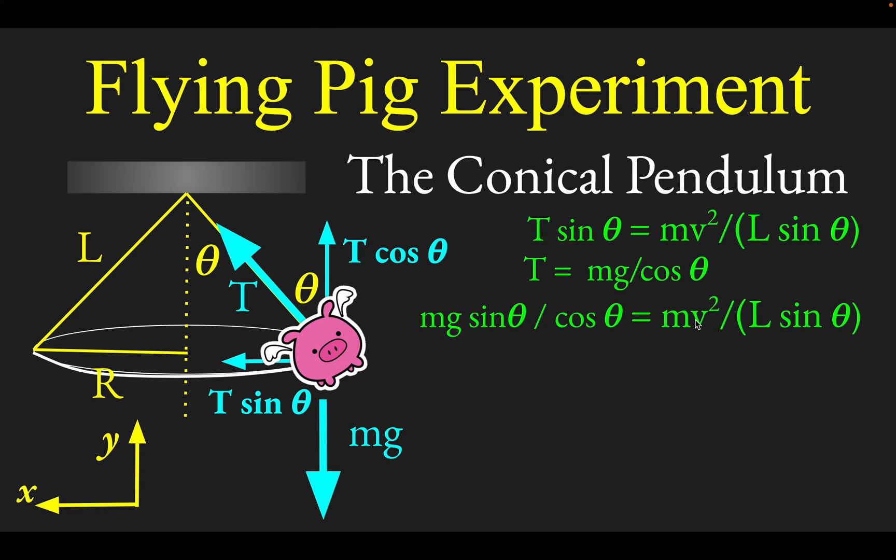Now we're going to focus on the velocity. The velocity of this pig is distance over time. The distance it travels is one circumference, and the time for one orbit is some special time called t. So velocity is distance over time: 2π times the radius of the circle, which is L sin θ, divided by the time for one orbit. Let's plug that expression for v into the equation above.